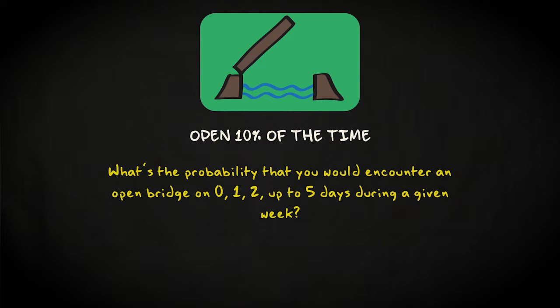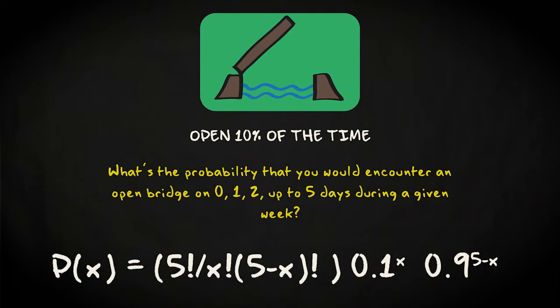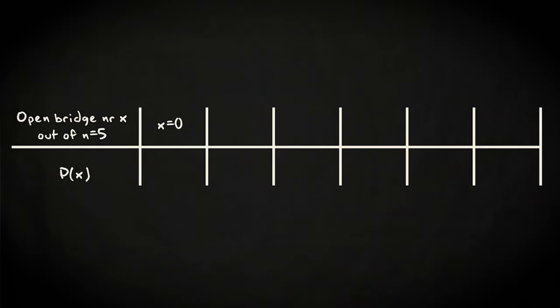Your experiment has 5 trials and you have a probability of 0.1 to encounter an open bridge. So, the binomial distribution in this case is this, with x the number of times you encounter an open bridge. By filling in values 0, 1, 2, up to 5 for x, you get the following probabilities.